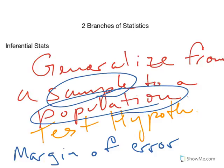Inferential statistics — the computations are much more intimidating, but it is incredibly important and useful because it allows us to test hypotheses. So this is a major branch of statistics. That'll do it for the two branches of statistics, and I will see you guys in the next video.